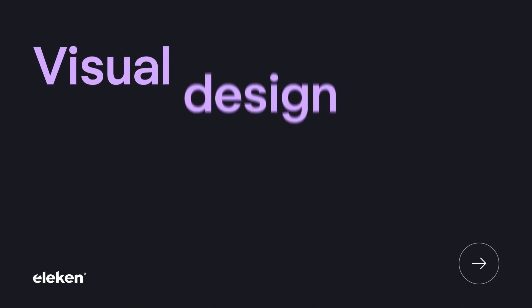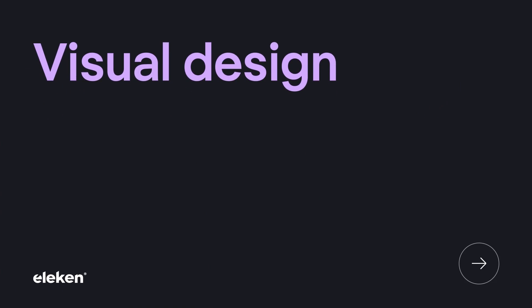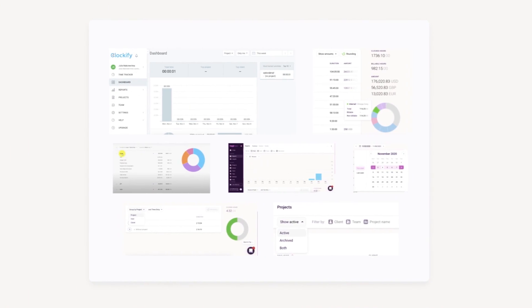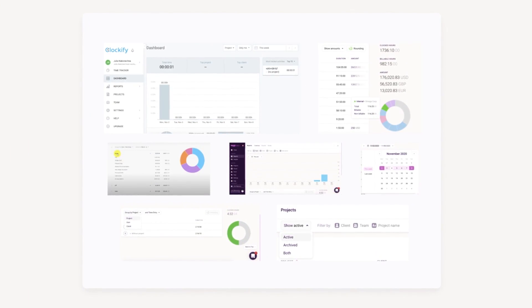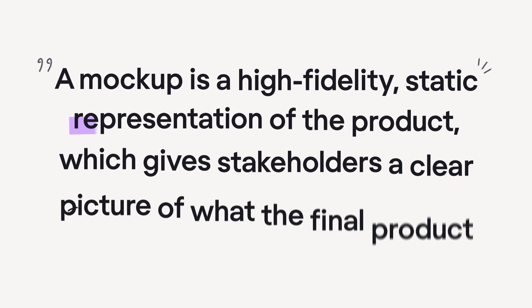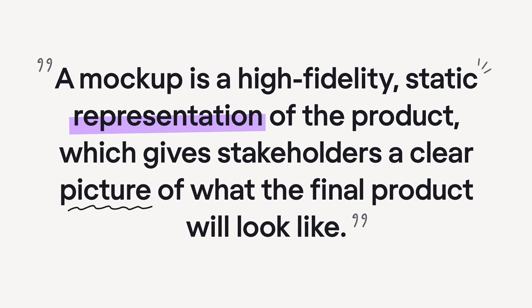After wireframes are finalized, designers start working on the visual design — that's stage number six. Screen sketches evolve into mockups. This includes adding graphics, typography, color, and images. A mockup is a high-fidelity, static representation of a product, which gives stakeholders a clear picture of what the final product will look like.